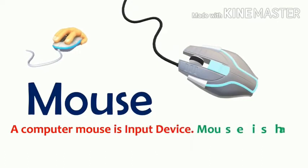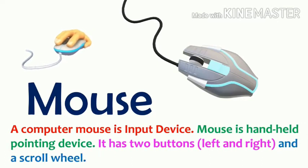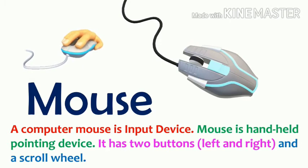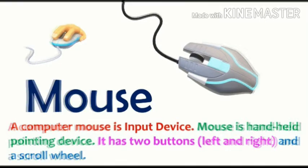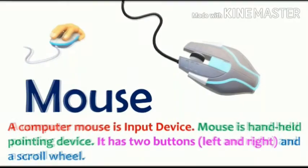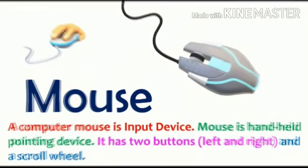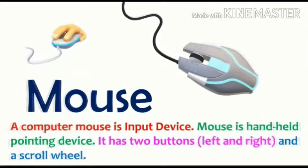Okay kids, next one. What is this? This is a mouse. Mouse is one of the input devices. Do you know what a real mouse looks like? Yes, we see them at home. So, the computer mouse looks like a real mouse. It is also known as a handheld pointing device. It has two buttons — a left and right — and a scroll wheel. Mouse is a pointing device.